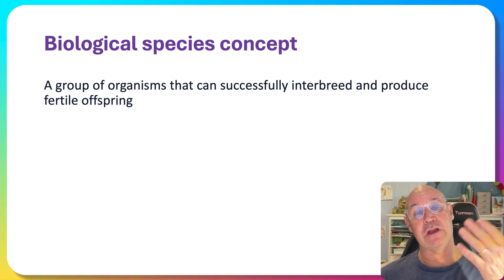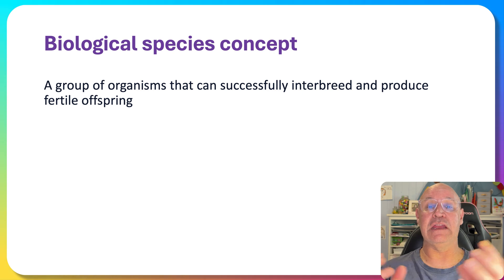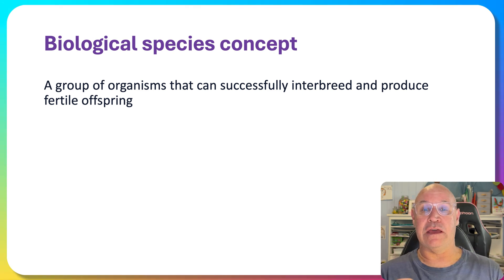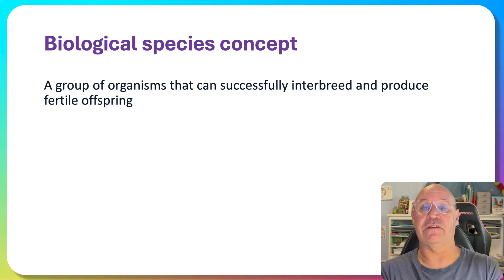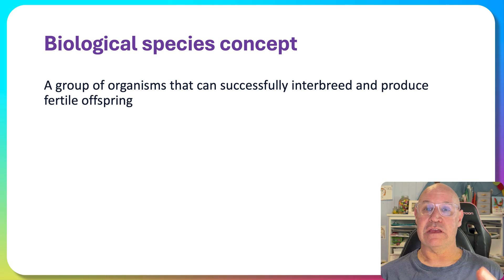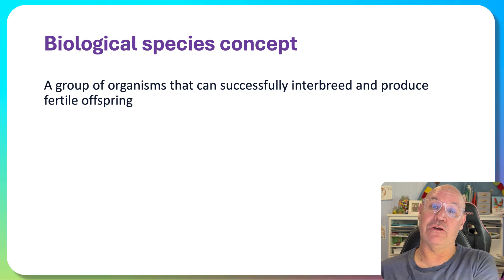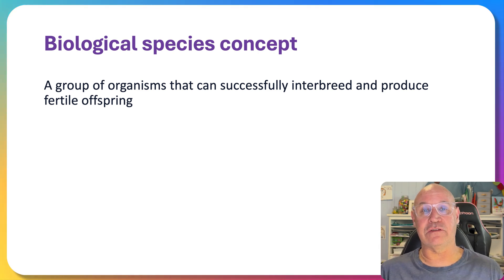That's different to a hybrid — an interspecies hybrid like a mule, which is a hybrid of a donkey and a horse. A mule is infertile, unable to reproduce. The biological species concept has the advantage of being able to determine quite easily if organisms are the same species, based on whether they can produce fertile offspring. However, it also has limitations.